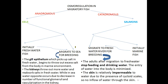In summary, we have seen osmoregulation in migratory fish. Two examples were considered: one anadromous and one catadromous. The catadromous migratory fish is the eel, migrating from freshwater to the ocean, and the anadromous migration is seen in salmon, migrating from ocean to freshwater. Both face two different osmoregulatory situations and must switch between freshwater and ocean water mechanisms.